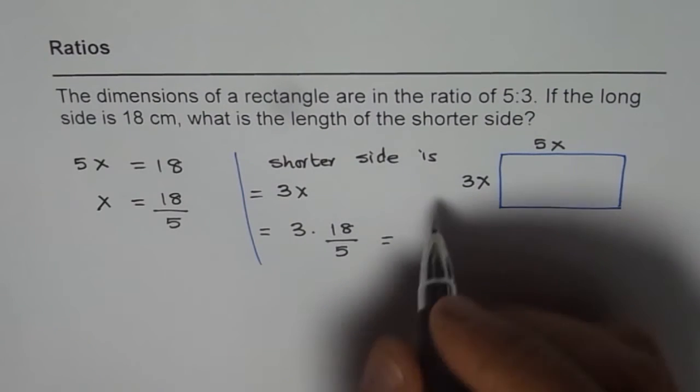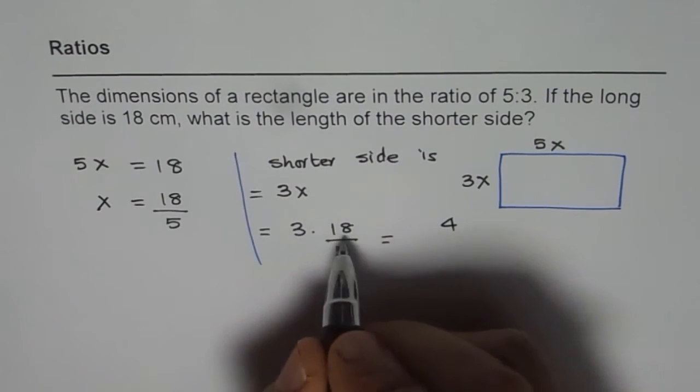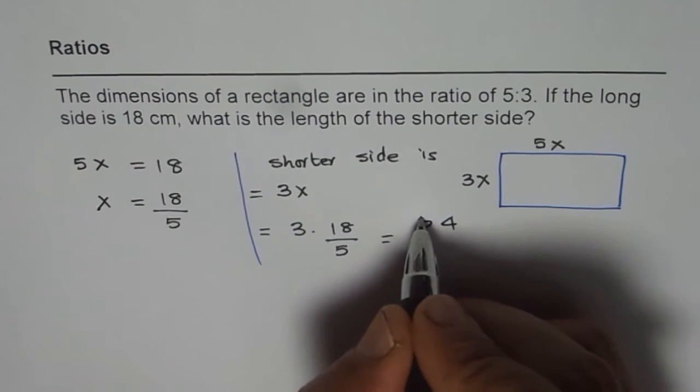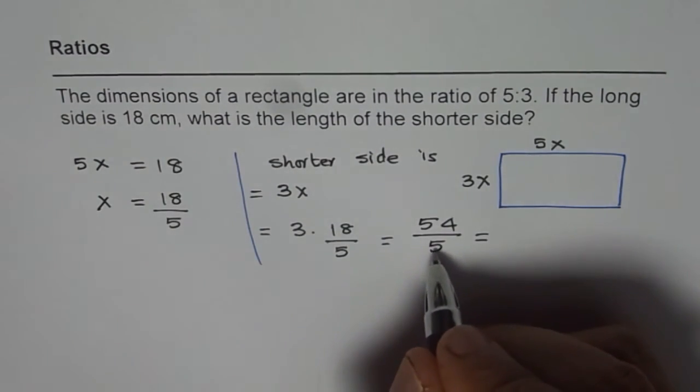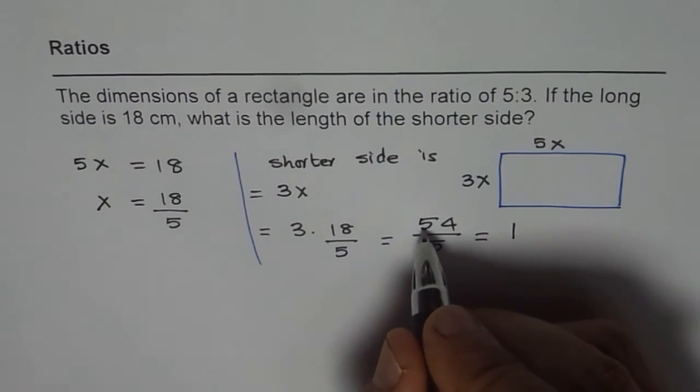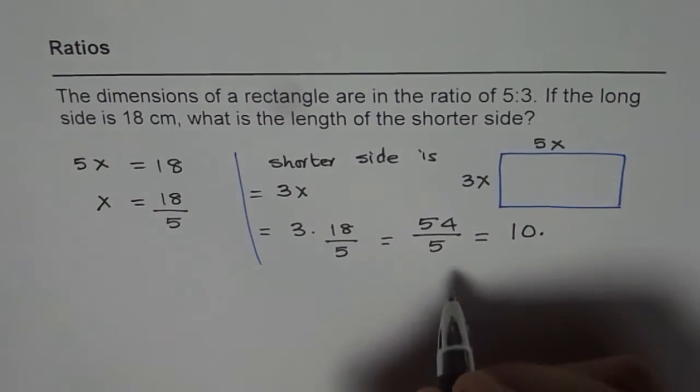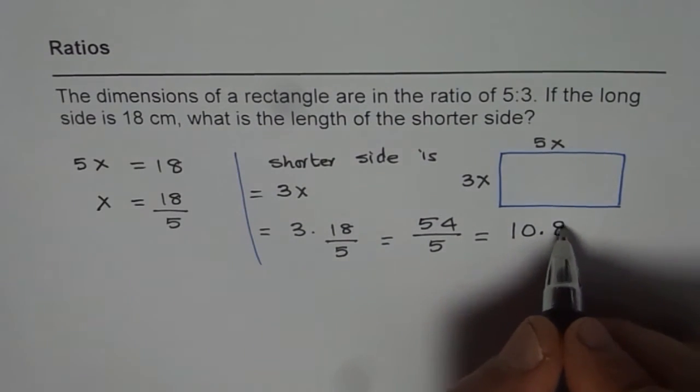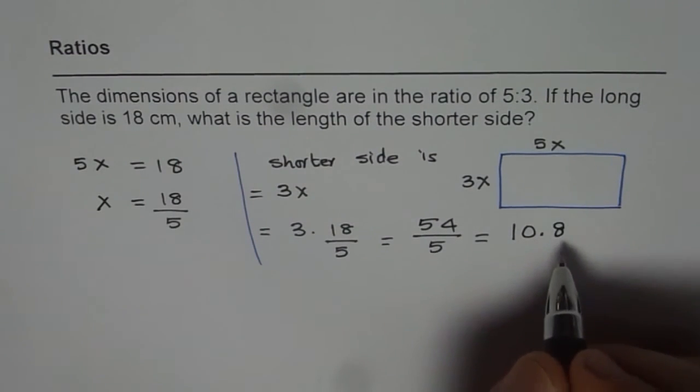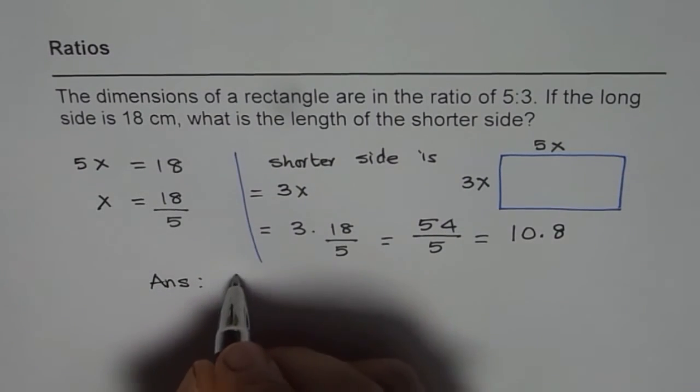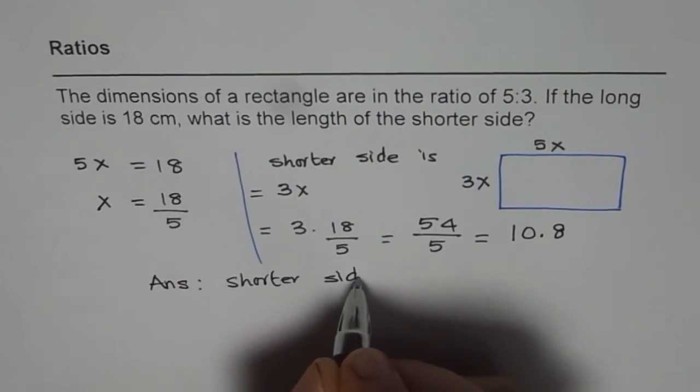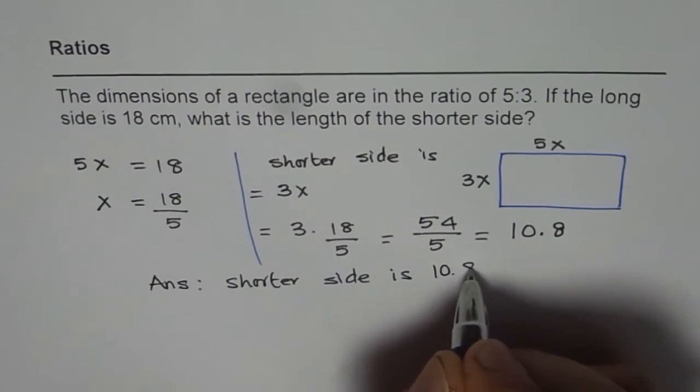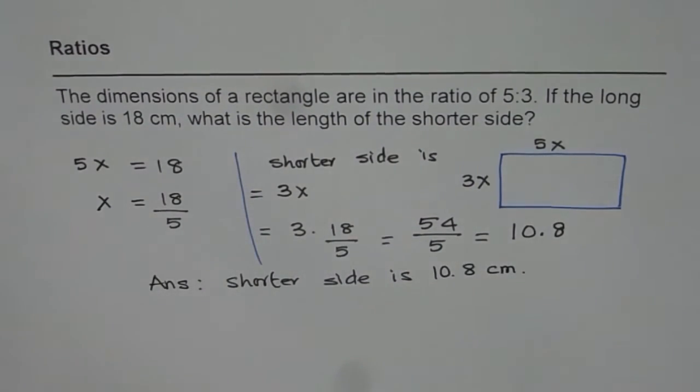So 3 times 18 is 54. So it is 54 over 5, which could be written in decimals. So 5 divides into 54, and we get 10.8. So therefore, our answer is the shorter side is 10.8 cm. That is the answer.